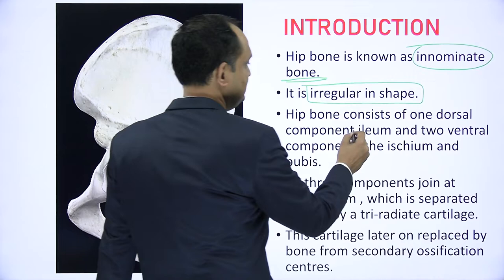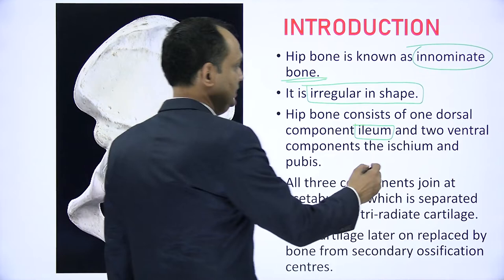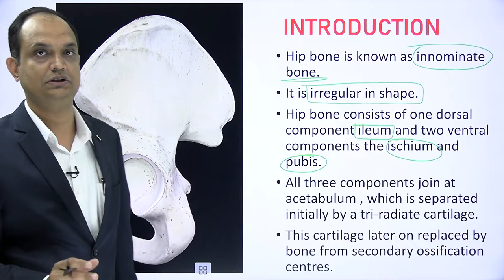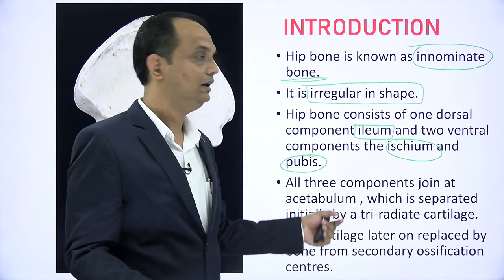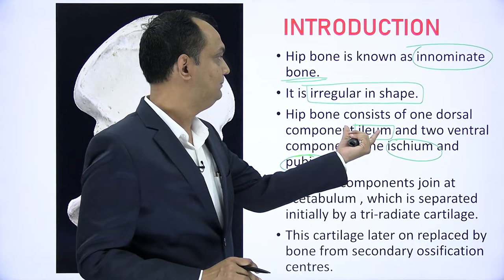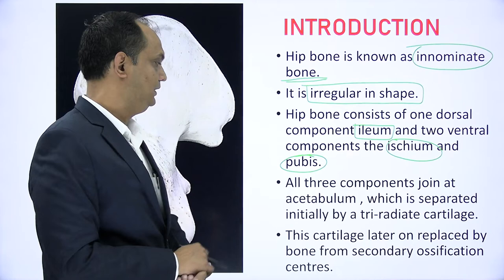The hip bone consists of one dorsal component known as ilium and two ventral components known as ischium and pubis. When you will hold this bone in the anatomical position, you will realize that the pubis comes on the anterior aspect and the ischium is also anteriorly or ventrally placed, but the ilium part is the dorsal component of the hip bone.